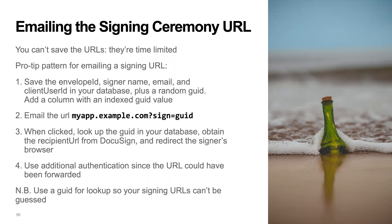Some people want to email out the signing ceremony URL, but you cannot do that — they're time-limited, lasting a maximum of five minutes, and you should only create it immediately before you're going to use it. However, you can enable a longer-lasting URL. The way you do that is to store the data you need in your application's database plus a random GUID. You would email out something like myapp.com/guid — the reason for the GUID is so a bad actor can't guess and get access to someone else's signing ceremony. When it's clicked, you look it up, figure out the information you need, call DocuSign to get the recipient URL, and redirect the signer's browser. You may also want to do additional authentication since the person you emailed might forward it to someone else.